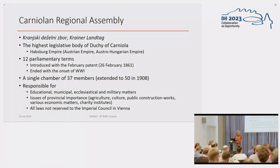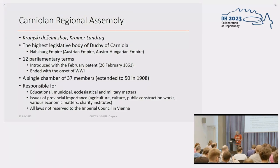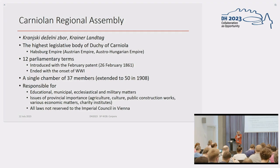It was a single chamber with first 37 members, and then in 1898 it was extended to 50 members. This assembly was responsible for all laws that were not reserved for the higher imperial council in Vienna — so mostly issues of provincial importance, like agriculture, culture, public construction work, economic matters, charity institutes, military, church, municipal, and educational issues. That was all dealt with in this assembly.